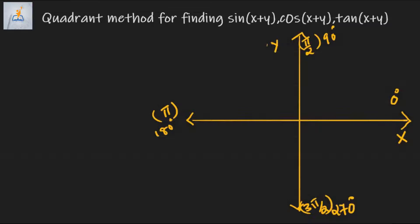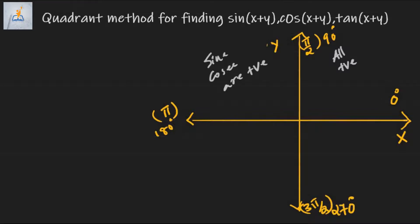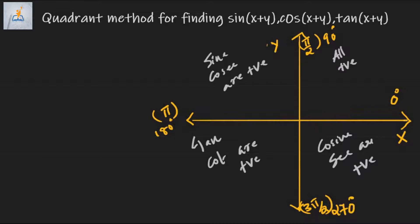In the first quadrant, all trigonometric functions are positive. In the second quadrant, only sin and cosec are positive. In the third quadrant, tan and cot are positive. In the fourth quadrant, cosine and sec are positive. This is the sign of trigonometric functions in the four quadrants.